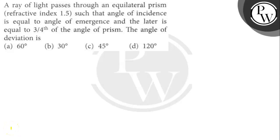Hello! Let's read the question. The question says: A ray of light passes through an equilateral prism such that the angle of incidence is equal to the angle of emergence, and the latter is equal to 3/4 of the angle of prism. So the angle of deviation is what? Let's find out.